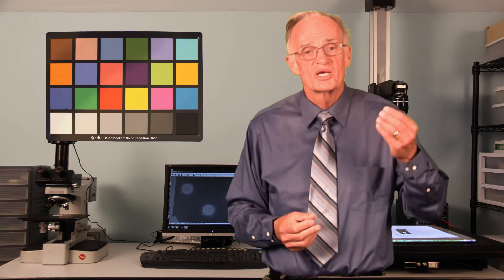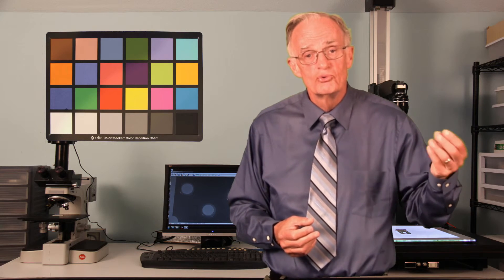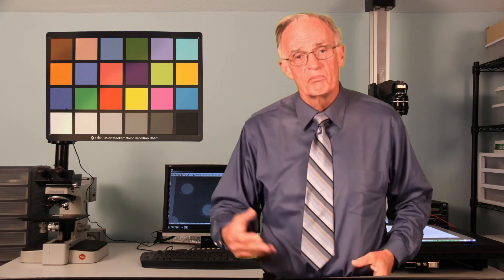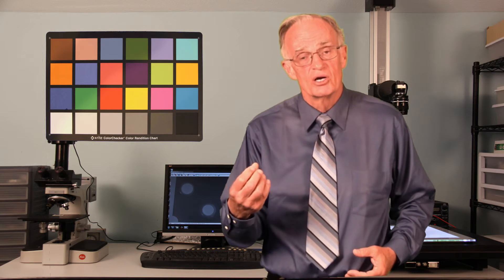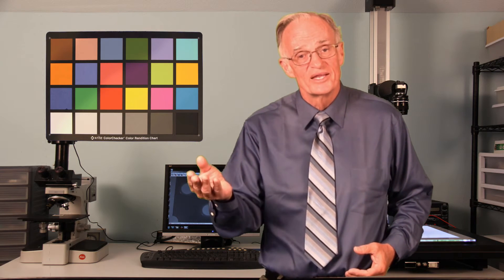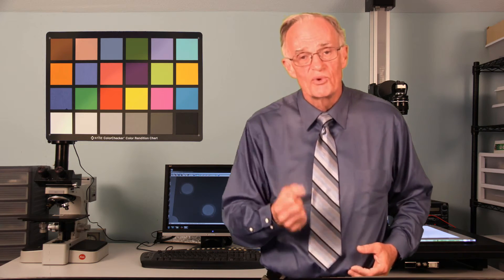What makes red look red? It looks red because that area absorbs the blue, the green, and the yellow wavelengths of light, and reflects the red wavelengths of light. Well, what makes blue look blue? It's because that area of the chart is absorbing the red, the yellow, and the green wavelengths, and reflecting the blue wavelengths.